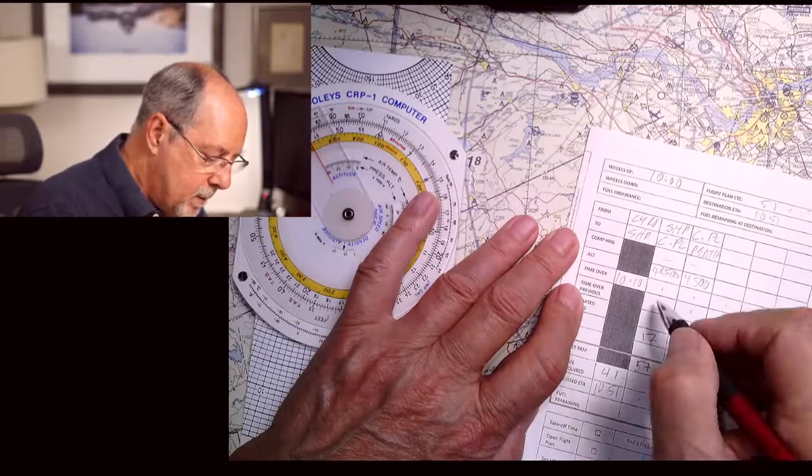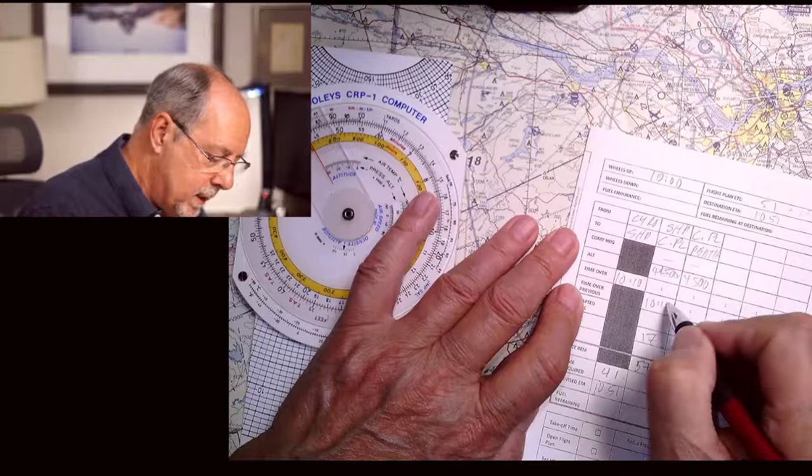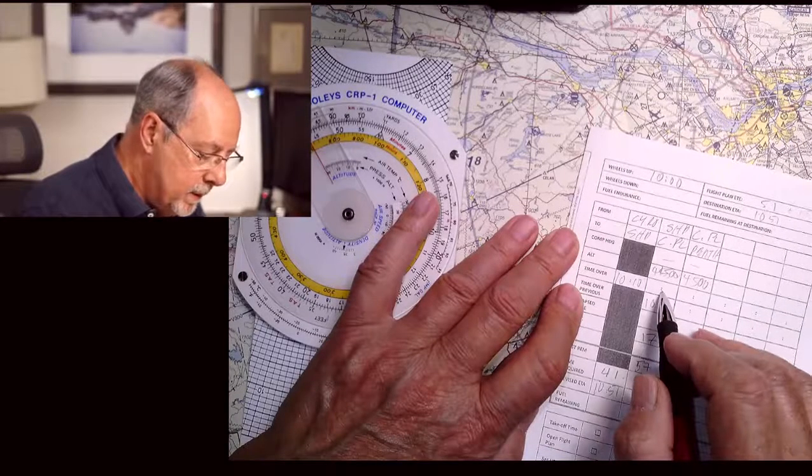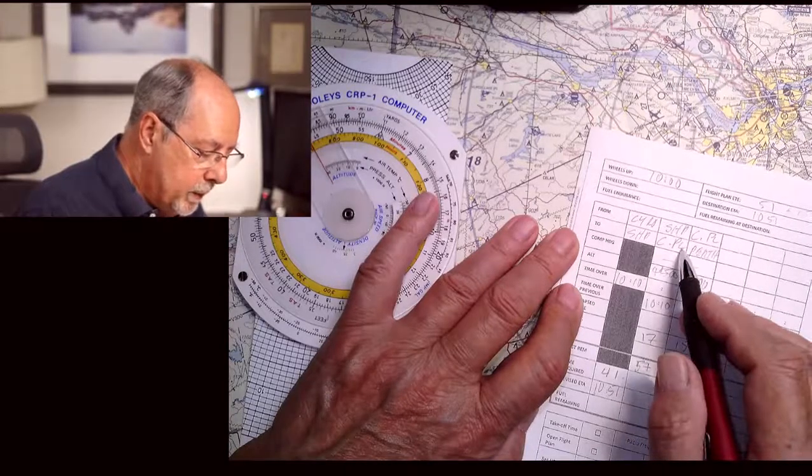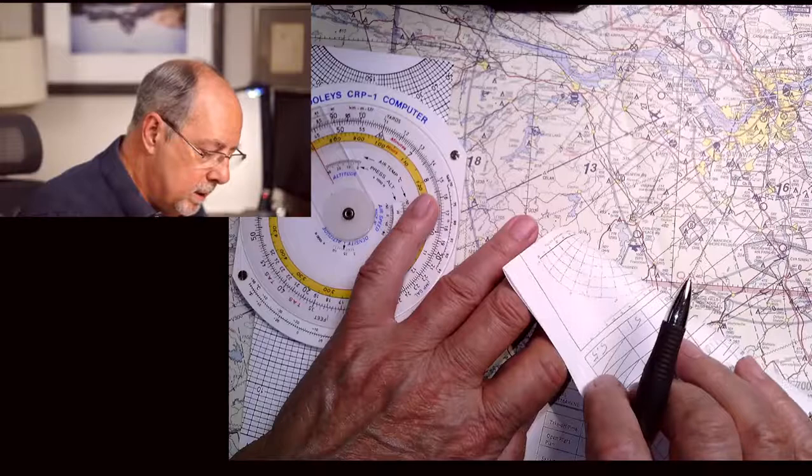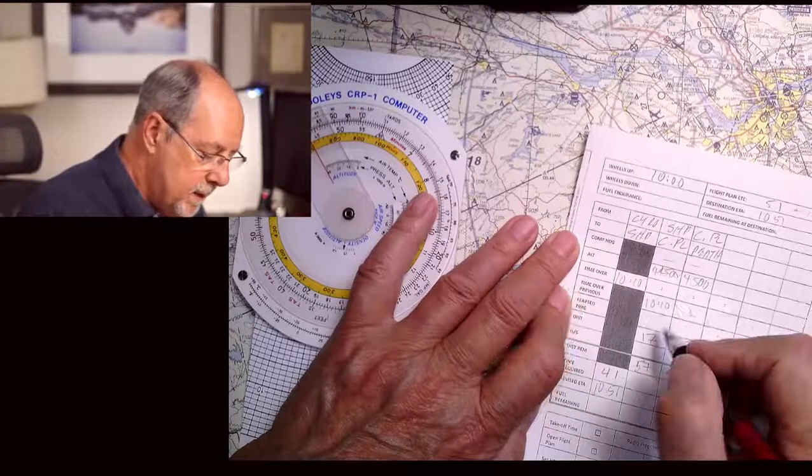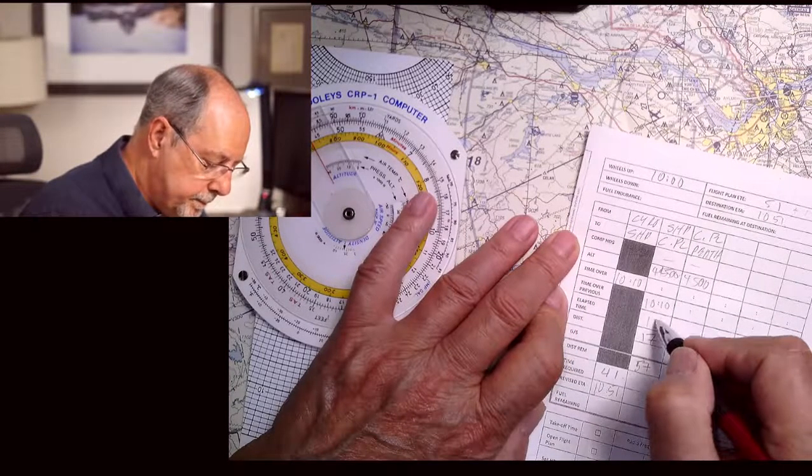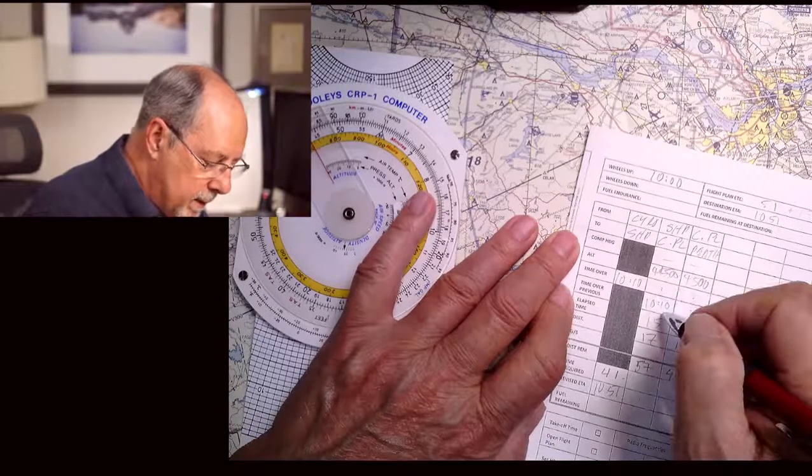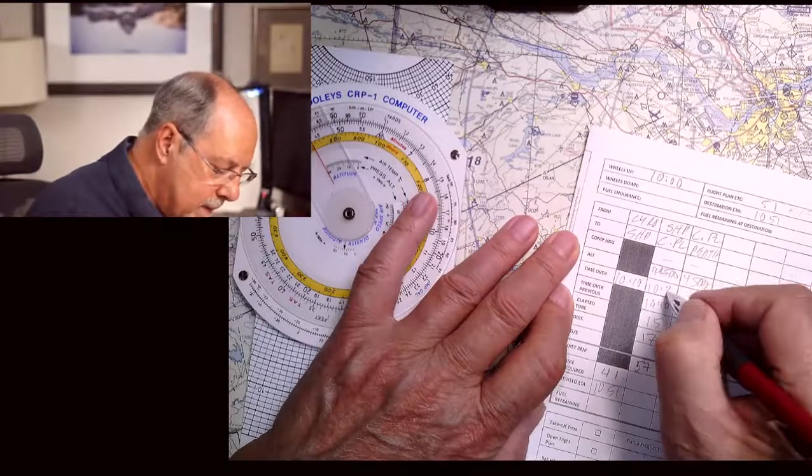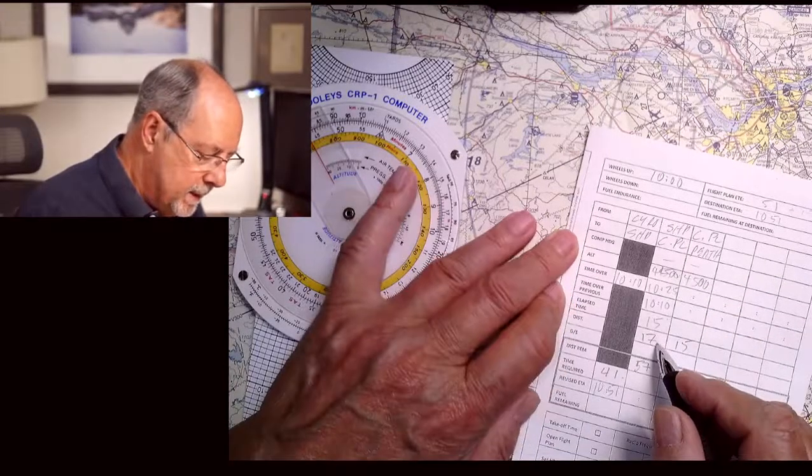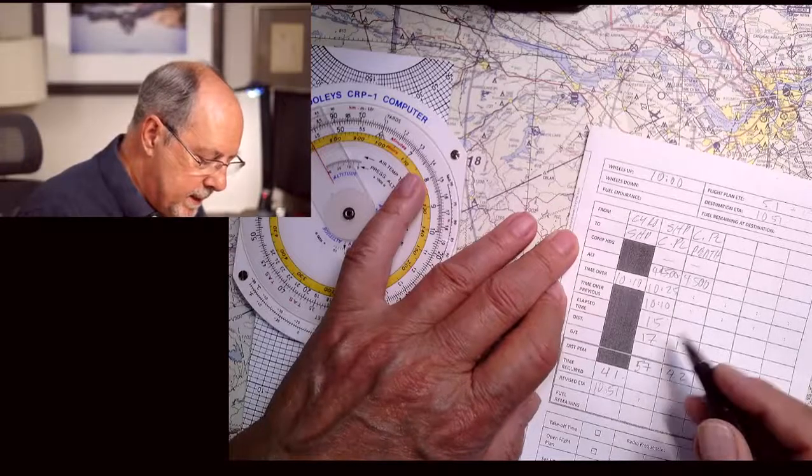So time over I transfer over to here, 10:10. And then to get to Carleton Place, let's say that it takes us 15 minutes. So 15 minutes would be 10:25. So that's 15 minutes, and then we've done a distance of 17.